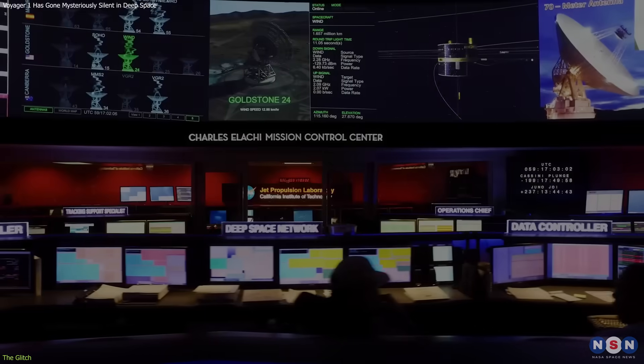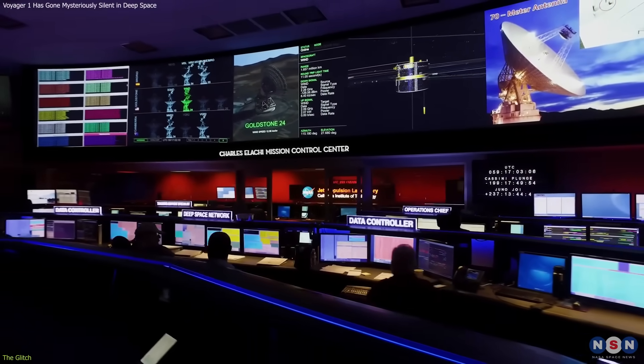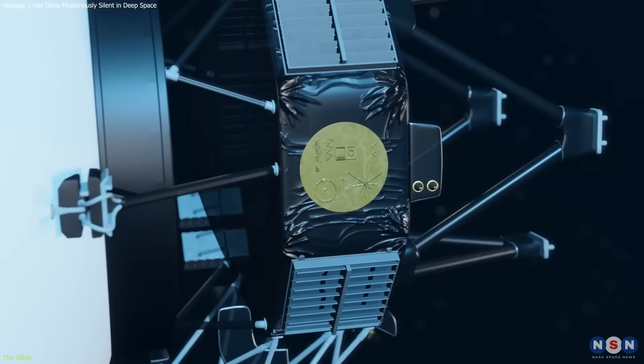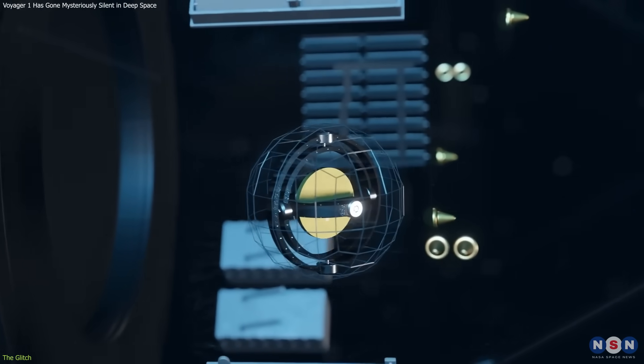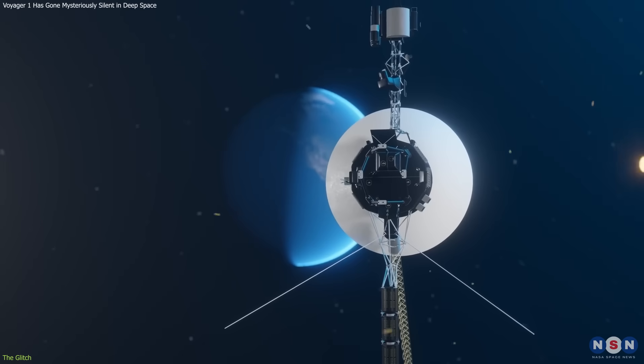But each time, the engineers were able to diagnose and fix the problem remotely using clever techniques and workarounds. For example, in 2017, they fired up four backup thrusters that had not been used for 37 years to help Voyager 1 orient itself and point its antenna towards Earth.